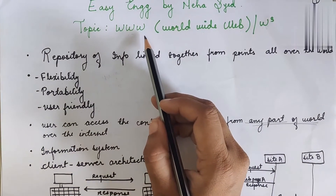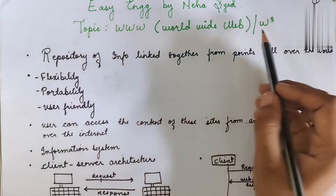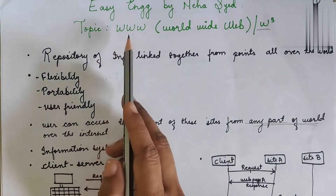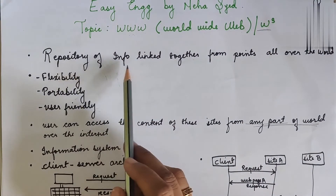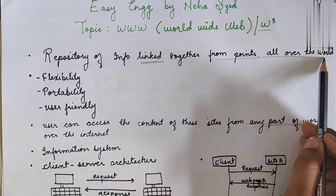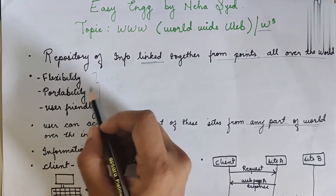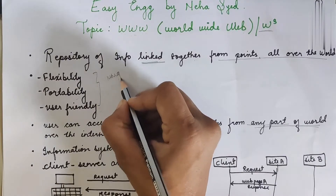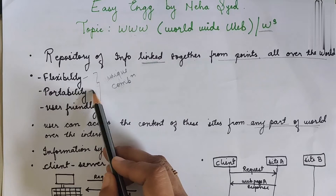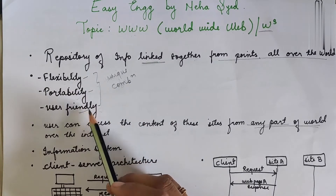Welcome back to my channel. Today's topic is the worldwide web, that is WWW. Sometimes it is also known as W3 or just the web. WWW is an information repository linked together from all different points all over the world. It has three unique combinations: flexibility, portability, and user-friendliness.